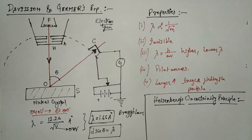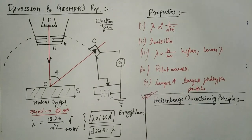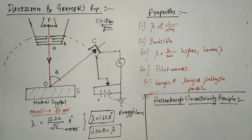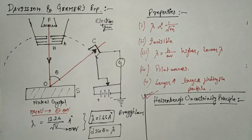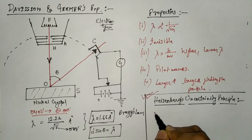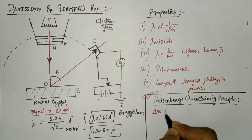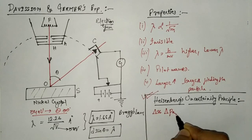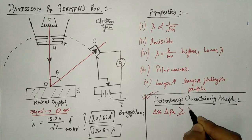The last important topic is Heisenberg's uncertainty principle. It states that the product of uncertainties in the simultaneous measurement of position and momentum of a particle is equal to or greater than ħ (h-bar). That is, Δx · Δpₓ ≥ ħ, where ħ = h/2π and h is Planck's constant.